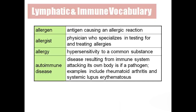Immune system vocabulary: Allergen — substances which cause an allergic reaction. Allergist — a person specialized in testing and treating allergies. Allergy — any hypersensitive reaction to any common substance. Autoimmune disease — when our own antigens fight with our own antibodies; examples are rheumatoid arthritis and systemic lupus erythematosus.